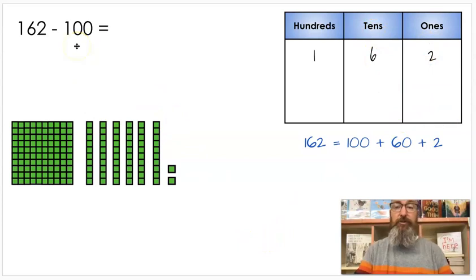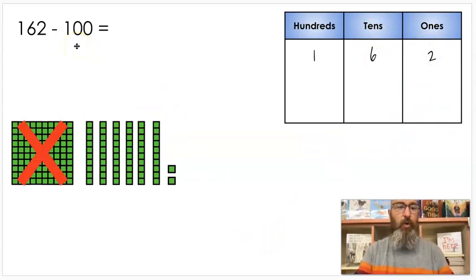I'm subtracting 100. So I'm just going to take away how many hundreds? One. Just 1 hundred. So I'm going to cross out my hundred there. I'm going to cross out my hundred in my hundreds chart. If I take away one there I have zero left. There's none there.